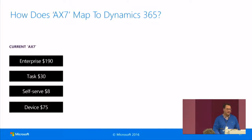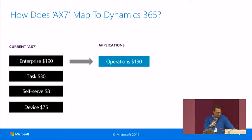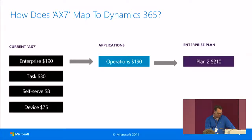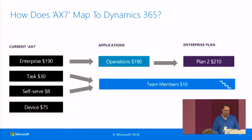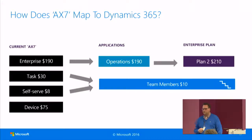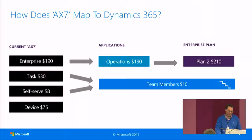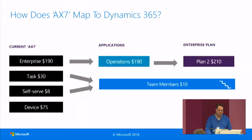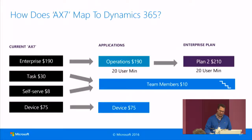For existing AX7 customers, here's how the mapping works: an enterprise user in AX7 becomes an Operations user at the same price, or becomes an Enterprise Plan Two for just $20 more. Task and self-service users merge into a team member license. If you have a lot of task users, it's just one third of the price. It's 25% more, but only $2 more if coming from self-serve. Most customers are likely on task licenses, and they benefit from the team member licenses. And device stays device.